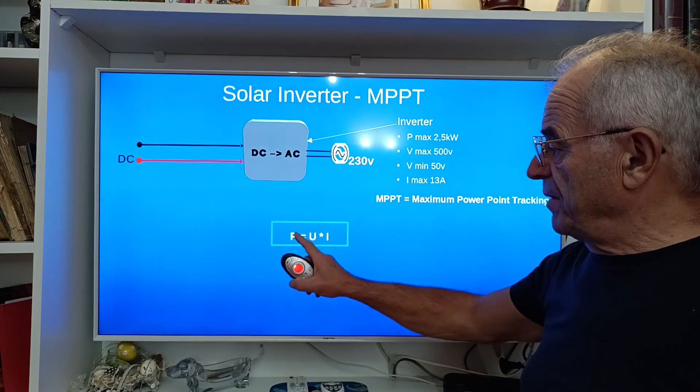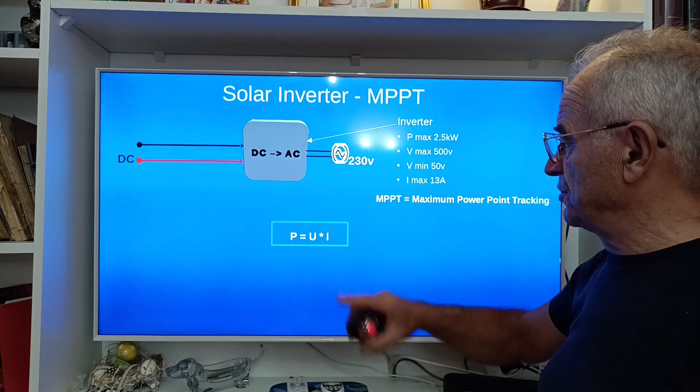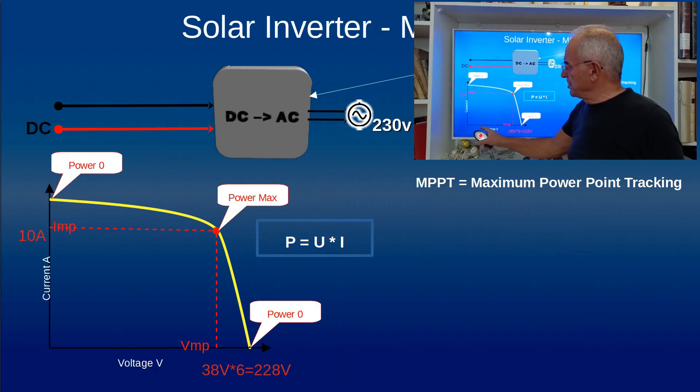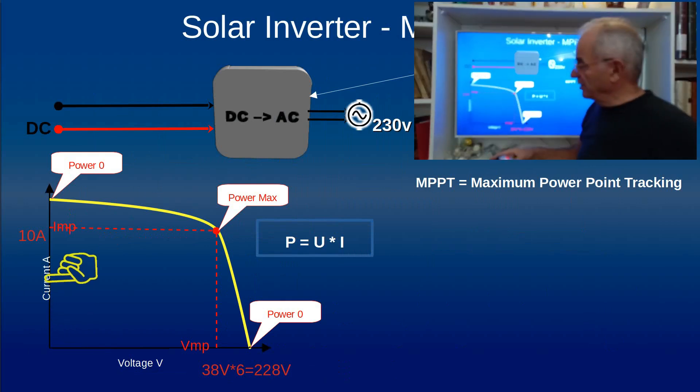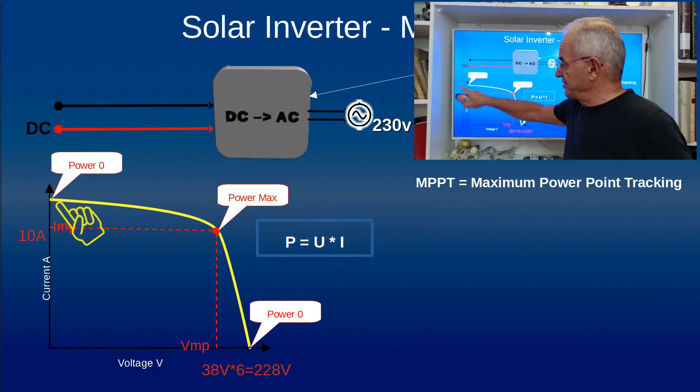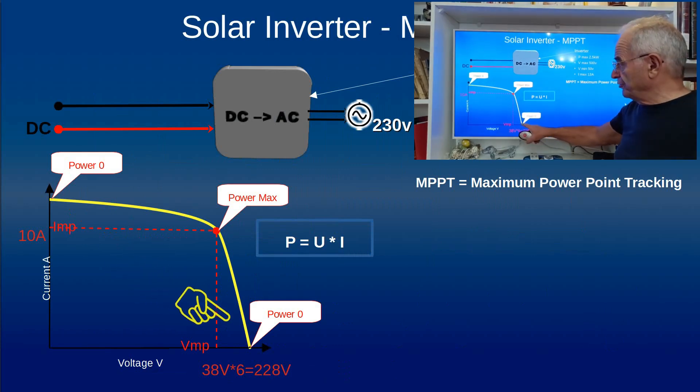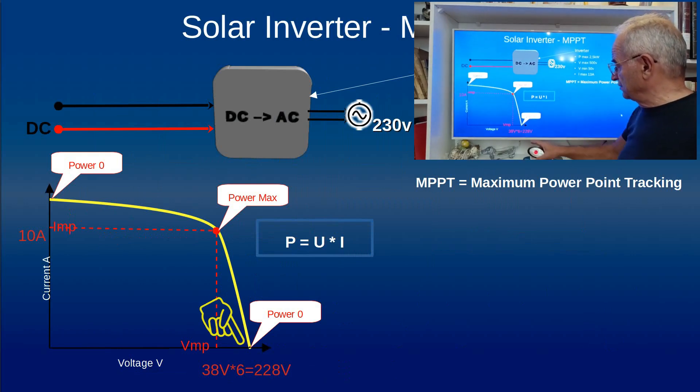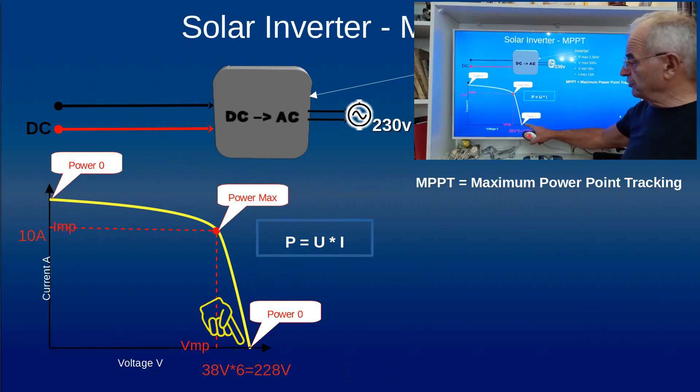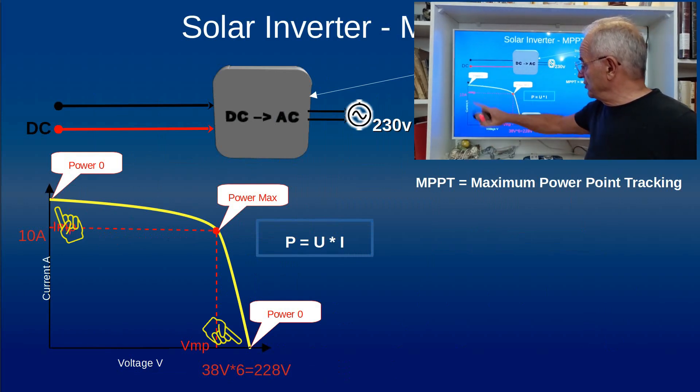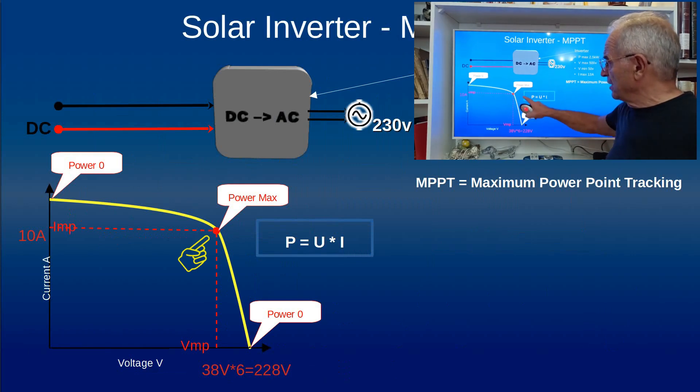You know that the power of a system is the voltage multiplied by the current. And so we will see now how the conversion is done. If we go back to a situation where we have a short circuit, so no voltage at the output of the system, we have about 11 amps. In reverse, if we are working in open circuit, we have no current extracted from the set of six panels, so we have 240 volts. In both cases we have no power produced because either there is no voltage or there is no current.